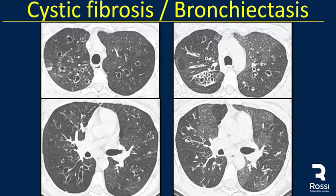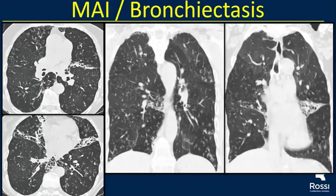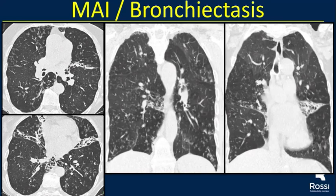Bronchiectasis and bronchiolectasis are another cause of air trapping — we can see cystic bronchiectasis in both lungs, and the expiratory CT shows those cystic bronchiectasis with areas of air trapping in large airway disease. Another case shows mosaic attenuation with patchy areas of high and low attenuation and small centrilobular nodules in a patient with MAI and bronchiectasis, involving the middle lung and lingula.